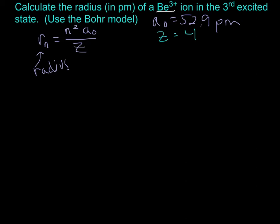We want the third excited state. So what n is that? The ground state is n equals 1, first excited state n equals 2. So the third excited state is n equals 4.